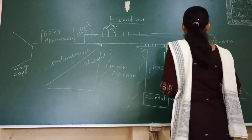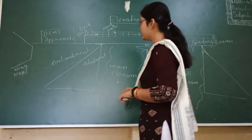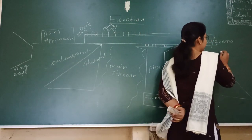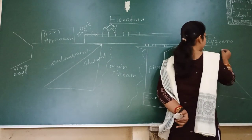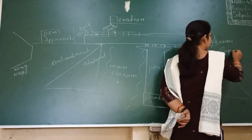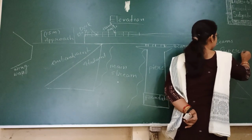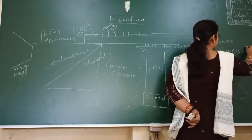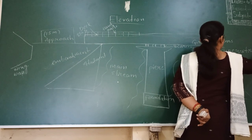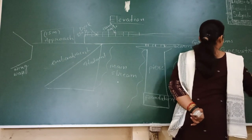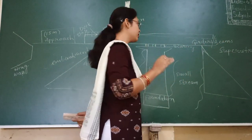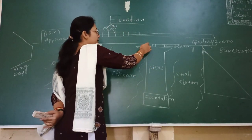One more thing which I have to explain is the part of the bridge. The surface which lies above the ground surface — the part of the bridge which lies above the ground surface is known as superstructure.